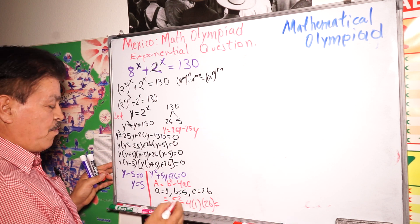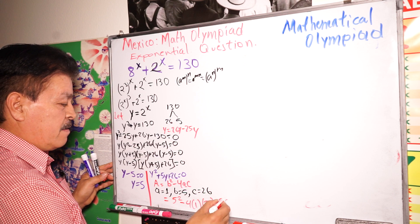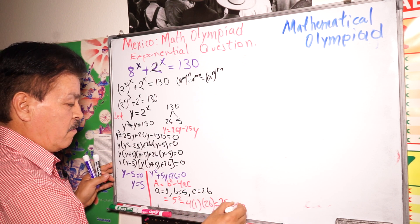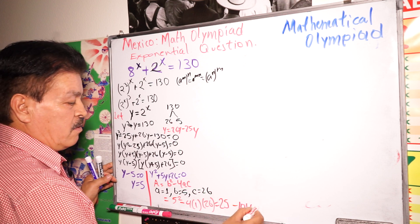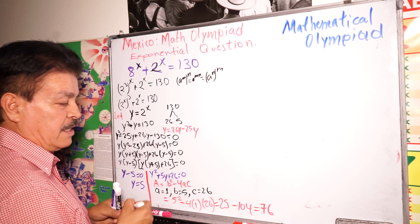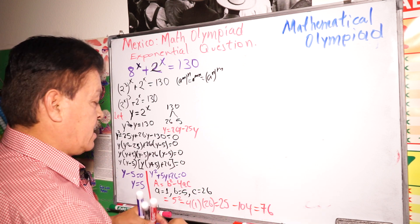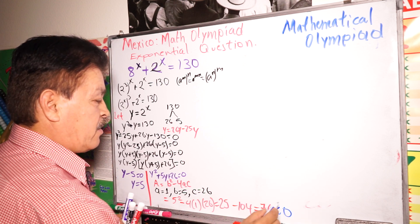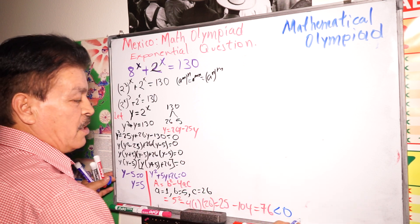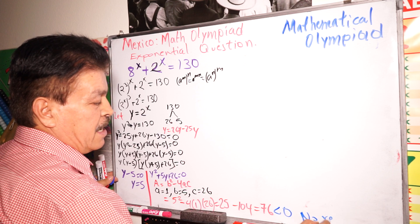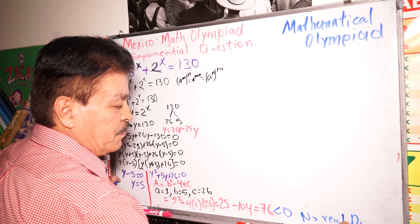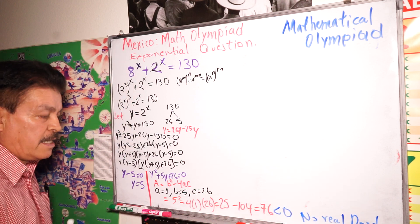The discriminant equals 25 minus 4 times 1 times 26, which equals 25 minus 104, which is negative 79. Since this is less than zero, there is no real solution — no real root from this quadratic.